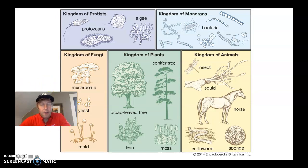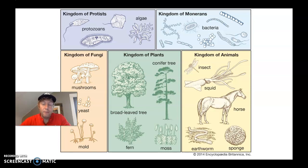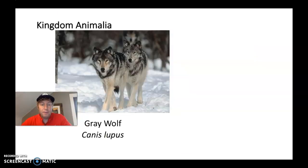In general, we have major ways we group living things. And if you remember, we already know what we consider living — the four characteristics of life, which you did earlier this week. Let's look at some examples. Kingdom animalia would be humans or wolves. The gray wolf — the scientific name is Canis lupus.